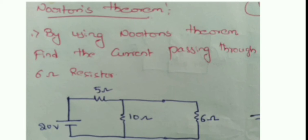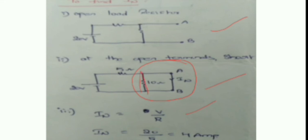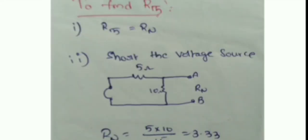By using Norton's theorem, find out the current passing through the 6-ohm resistor. In Case 1, open the 6-ohm resistor, then short those open terminals, and find I_Norton across the terminals. To find I_Norton, note that Norton's current always chooses the low-resistance path, so the resistor can be shorted. Then I_Norton is equal to 4 amperes.